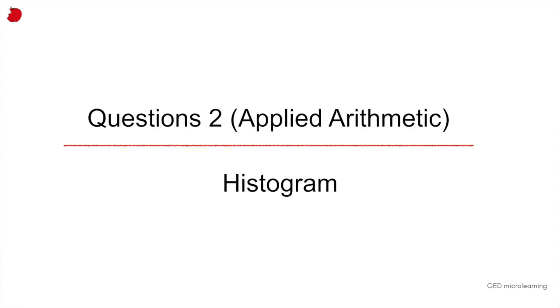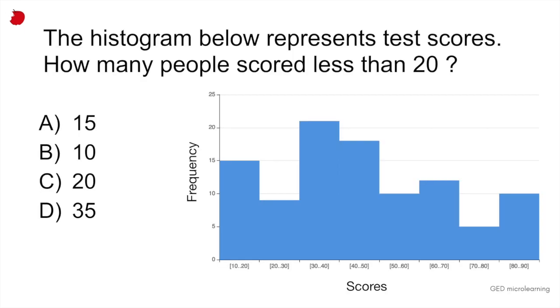Question two is an applied arithmetic problem, and this involves histograms. We haven't done histograms before, so I thought it'd be worthwhile to have a look at them. The question says, the histogram below represents test scores. How many people scored less than 20?